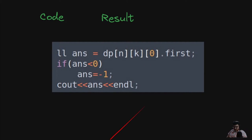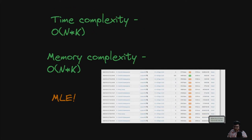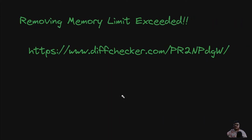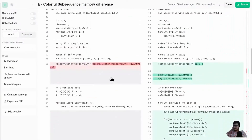The time complexity is now O(NK), and memory complexity is also O(NK), ignoring small constant factors for sorting a vector of size 2 or 3. However, this may cause MLE — AtCoder doesn't have an explicit MLE verdict so you may get TLE or runtime error. Notice that dp[i] depends only on dp[i-1], so when computing dp[idx] we can remove dp[idx-2] from memory.